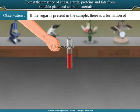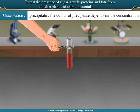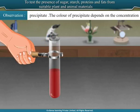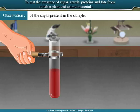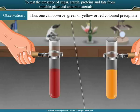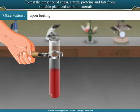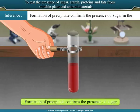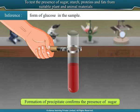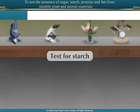Observation: If sugar is present in the sample, there is a formation of precipitate. The colour of the precipitate depends on the concentration of sugar present in the sample. One can observe green, yellow, or red coloured precipitate upon boiling. Inference: Formation of precipitate confirms the presence of sugar in the form of glucose in the sample.